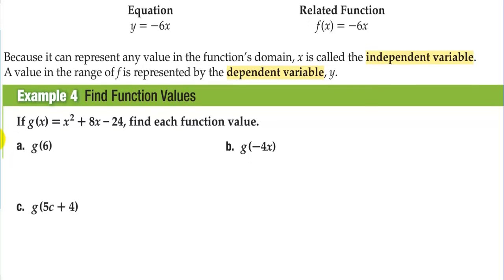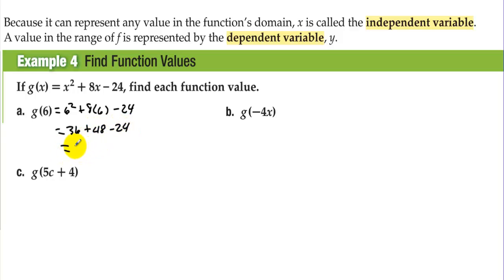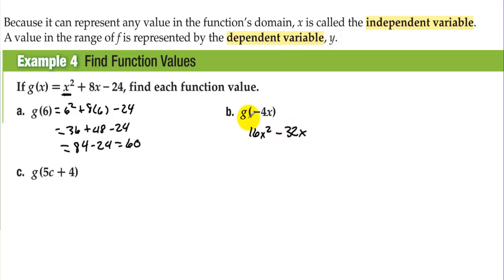Example four: find function values. If g of x equals that expression, find each function value. For g of 6, we plug in 6: six squared plus 8 times 6 minus 24, which equals 36 plus 48 minus 24, equals 84 minus 24, so we get 60. For g of negative 4x, we plug in negative 4x for all x's: we get 16x squared minus 32x minus 24.